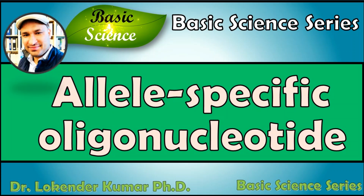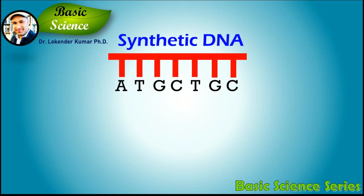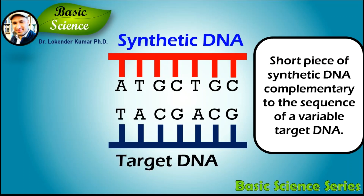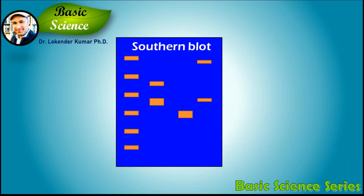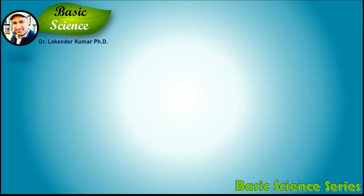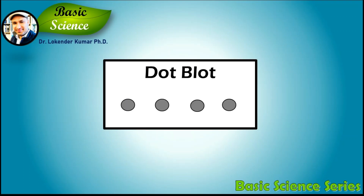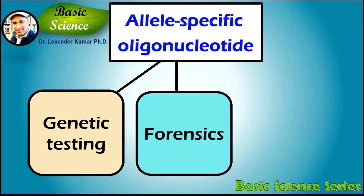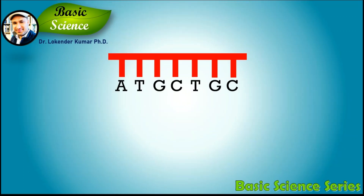Welcome to the Basic Science Series. Today we are going to discuss allele-specific oligonucleotide, or ASO. An ASO is a short piece of synthetic DNA complementary to the sequence of a variable target DNA. It acts as a probe for the presence of a target in a southern blot assay or, more commonly, in a simpler dot blot assay. It is a common tool used in genetic testing, forensics, and molecular biology research.